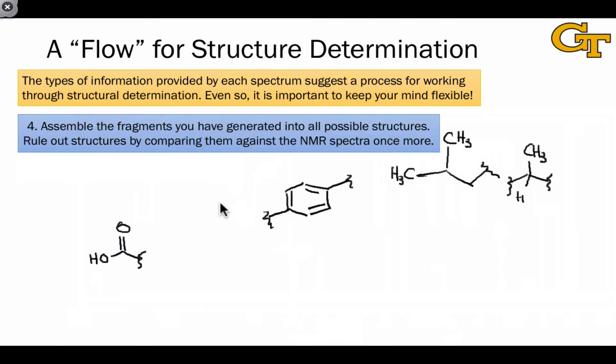The final step is to assemble these fragments into all possible structures, and then to rule out the structures by comparing them against the NMR spectra once more. For example, one thing we want to avoid is connecting the isobutyl group directly to this methine, since that would imply coupling between the two hydrogens here and the one hydrogen here. But I really like this example because there are multiple possibilities that we could generate from these fragments alone.